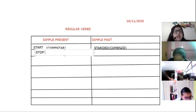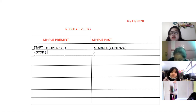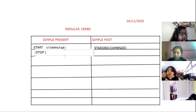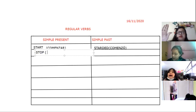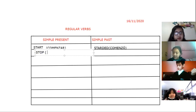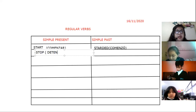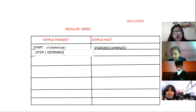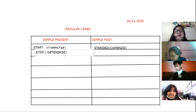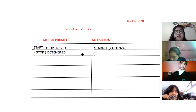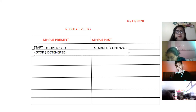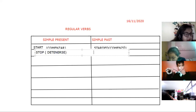What is the meaning of stop? Isaac, what is the meaning of stop? Stop means pare o detenerse. So in the past, Isaac — what is the verb stop in the past? Stopped. Very good. Stop → stopped.